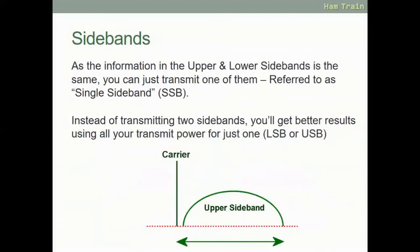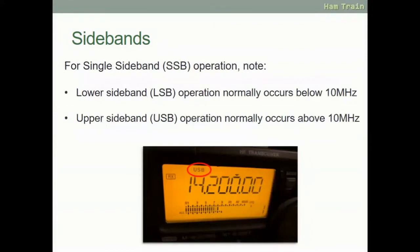Because the information in the upper and lower sidebands is the same, you can transmit just one of them — that is referred to as single sideband. This allows better results because you can put all your transmit power behind one sideband rather than both, allowing the signal to go further than an AM or FM signal. Instead of transmitting two sidebands, you get better results using all your transmit power for just one — either lower or upper sideband. Lower sideband operation normally occurs below 10 MHz, and anything above 10 MHz is normally upper sideband.